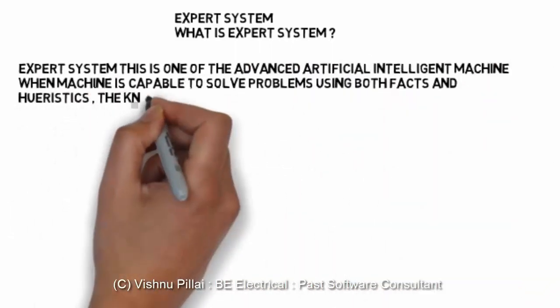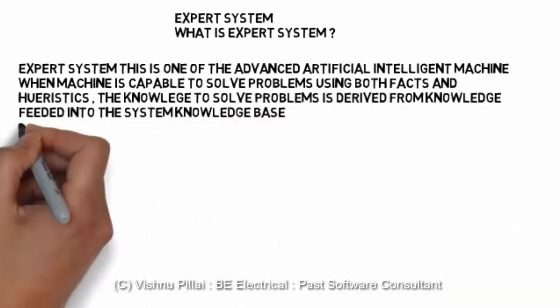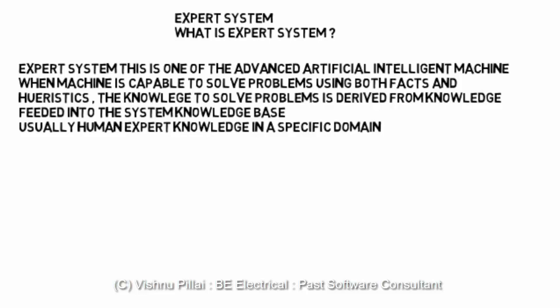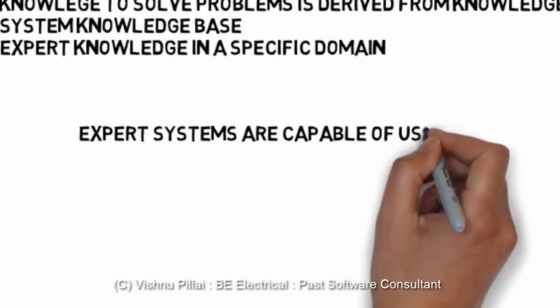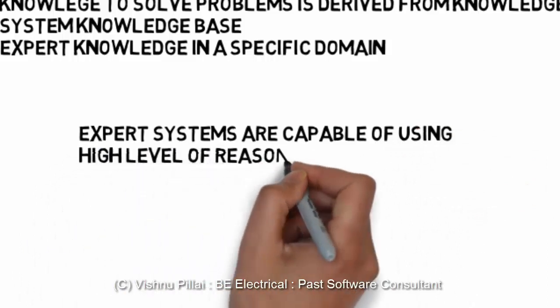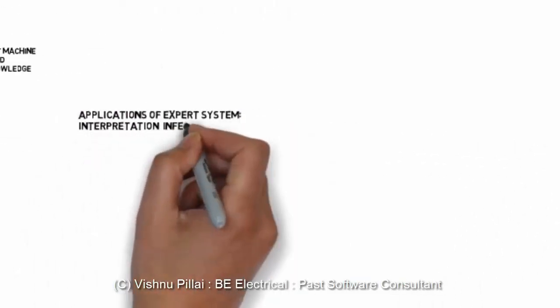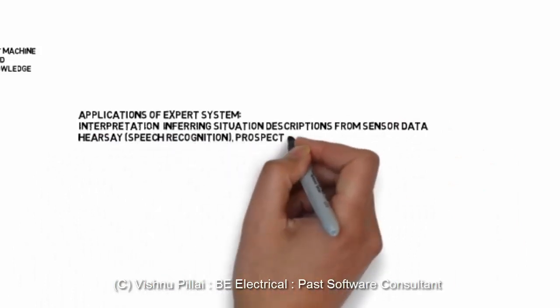The Expert System is one of the advanced Artificially Intelligent Machines. When a machine is capable of solving problems using both facts and heuristics, the knowledge to solve problems is derived from knowledge fed into the system's knowledge base — it is usually human expert knowledge in a specific domain, like medicine, archaeology, or science. Expert Systems are capable of using a high level of reasoning to complete tasks.